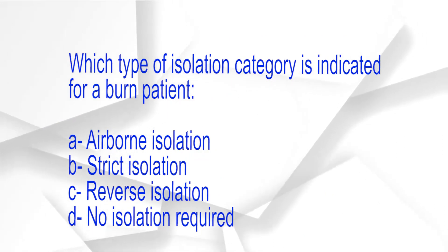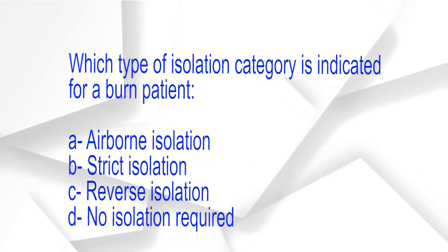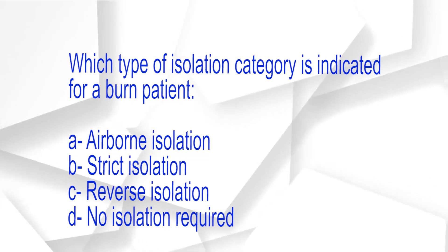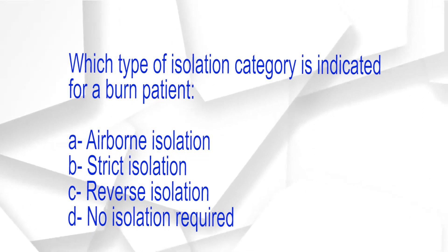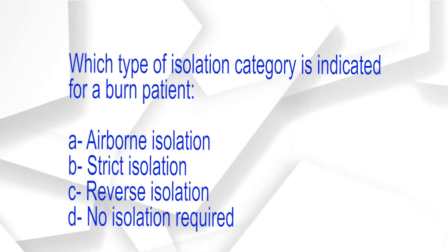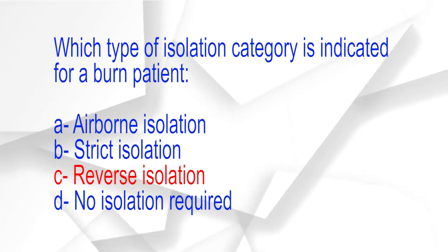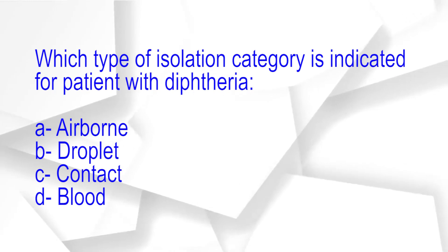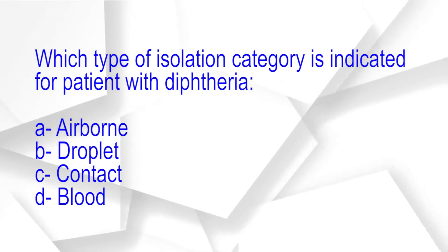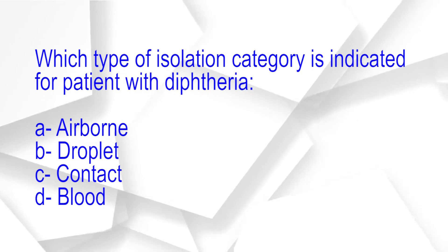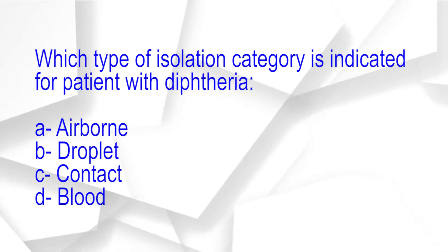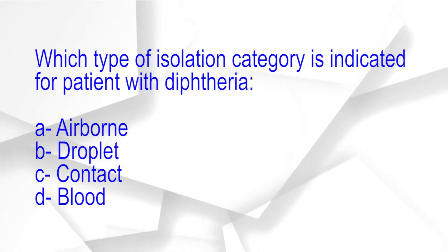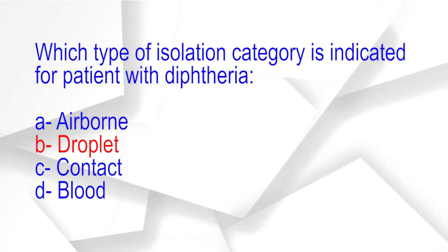Which type of isolation category is indicated for a burn patient? A. Airborne isolation. B. Strict isolation. C. Reverse isolation. D. No isolation required. The correct answer is option C: Reverse isolation. Which type of isolation is indicated for a patient with diphtheria? A. Airborne. B. Droplet. C. Contact. D. Blood. The correct answer is option B: Droplet.